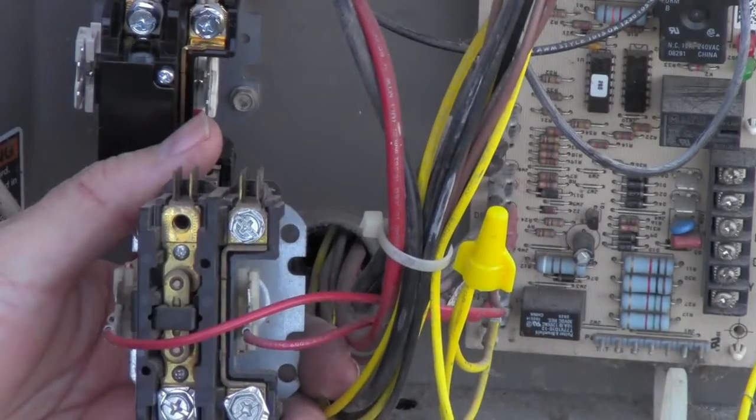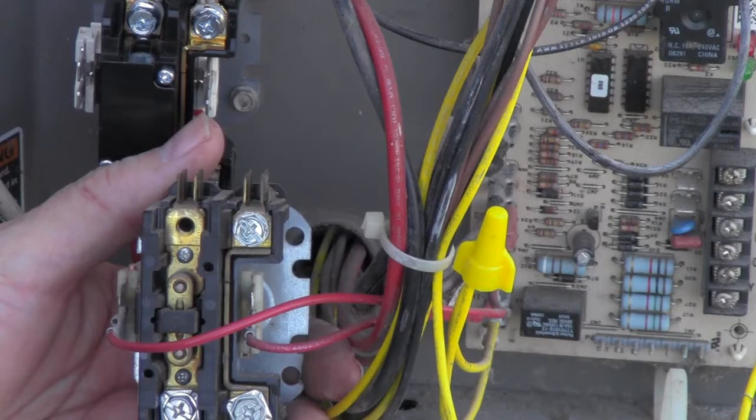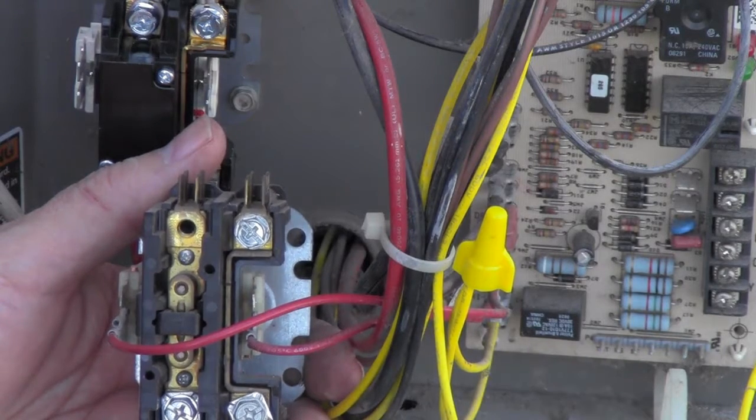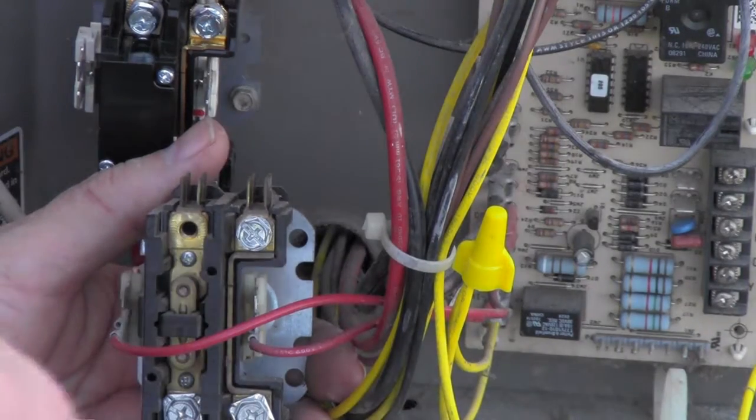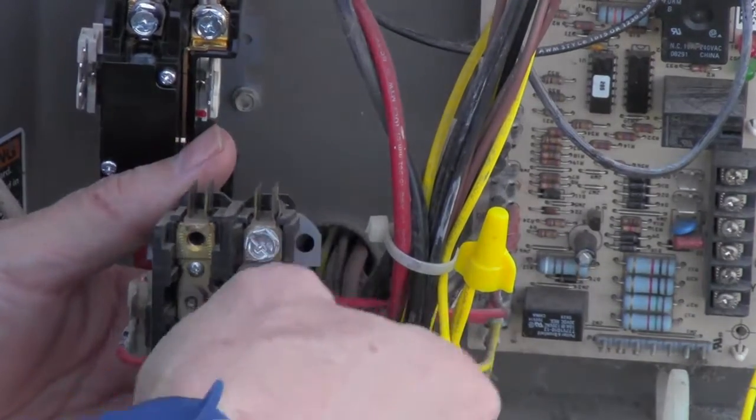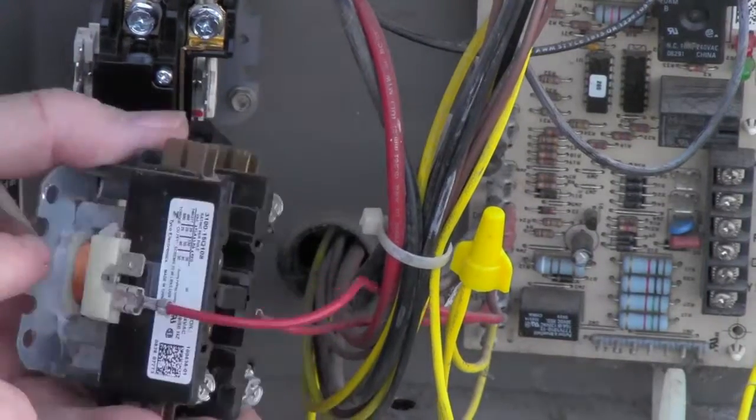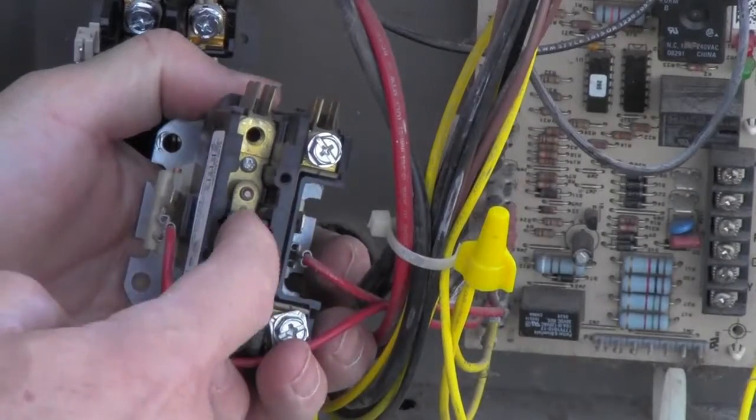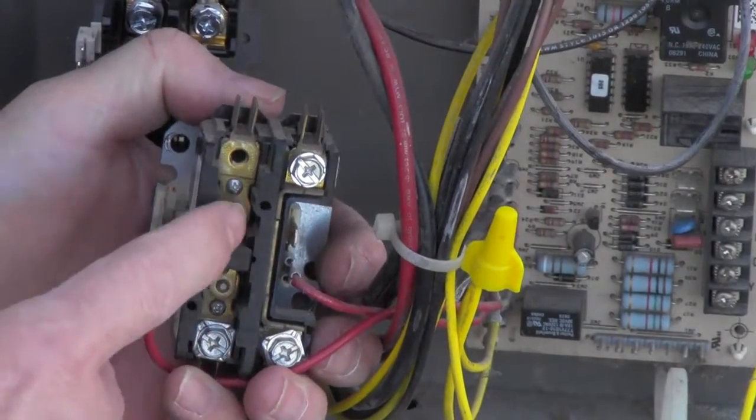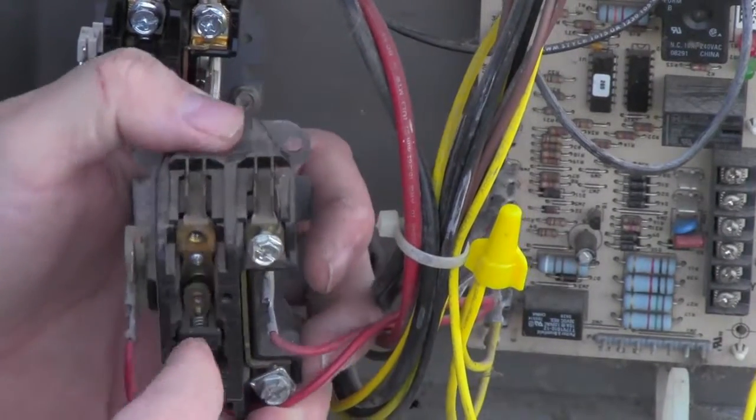So basically when your thermostat makes a call for a demand, or your thermostat has a demand for cooling, the contacts in the thermostat will close. It will send 24 volts out to this coil. That's when the coil decides to go ahead and close this contactor. You can see right here how that's closing.